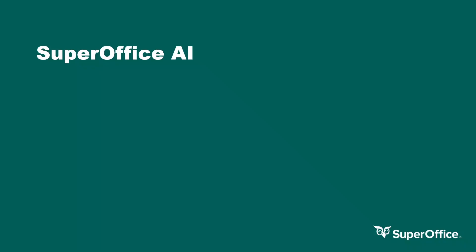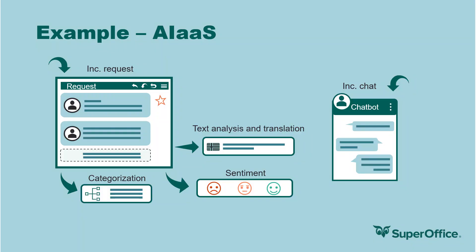Everyone is talking about artificial intelligence technology and how it helps make better informed and quicker decisions, as well as utilize cutting edge technology. To enable smart user experiences and help our customers use CRM data to achieve more, SuperOffice will introduce the new AI as a service functionality. Our AI offering is currently in pilot and will help customers automate and work smarter and faster in SuperOffice Service — like the ability to detect the language and translate messages.